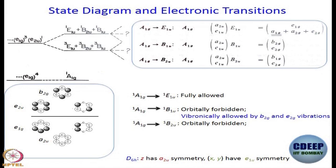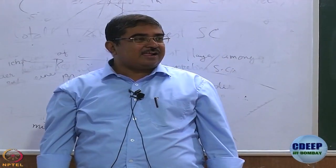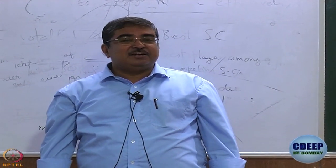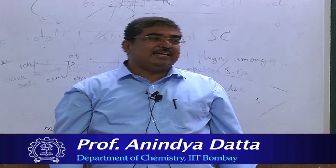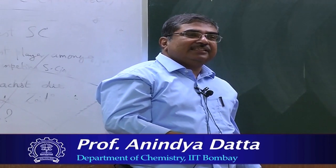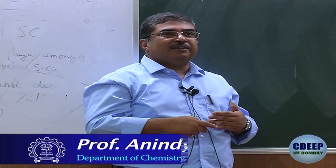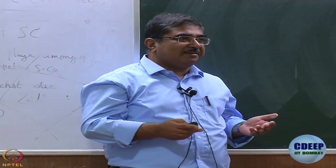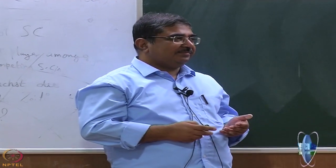So that is what we are saying. The first one can be vibronically allowed by B2G and E2G vibrations. The second one is vibronically allowed by B1G and E2G vibrations. Do we have such vibrations? Do we have such vibronic coupling? That is what we will learn tomorrow, and that is what will let us explain the electronic spectrum.